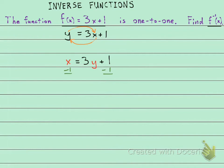And then one more step to get the y by itself, we're going to divide both sides by 3. So here we have it: (x - 1)/3 = y.